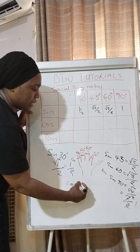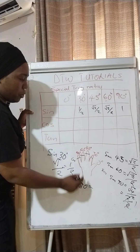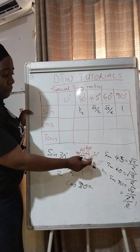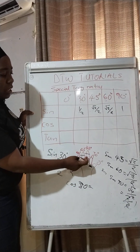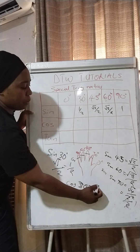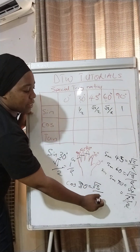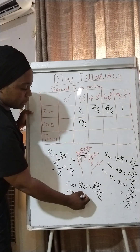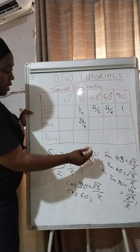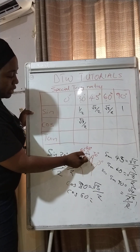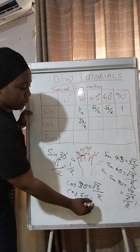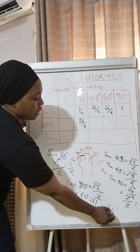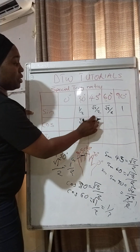Now let us go to cosine 30. For cosine, you cross the 30-degree finger, but cosine is on the left side. How many fingers do we have on the left when we cross 30? One, two, three. So that would be the square root of three over two. What about cosine 60? When we cross the 60-degree finger, how many fingers are left on the cosine side? One. So that's the square root of one over two, which is one over two.